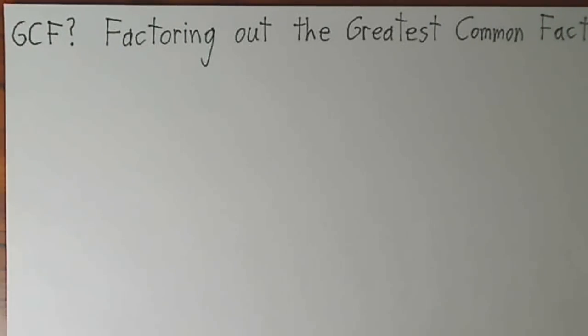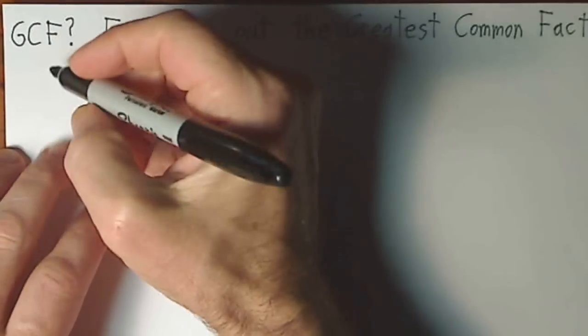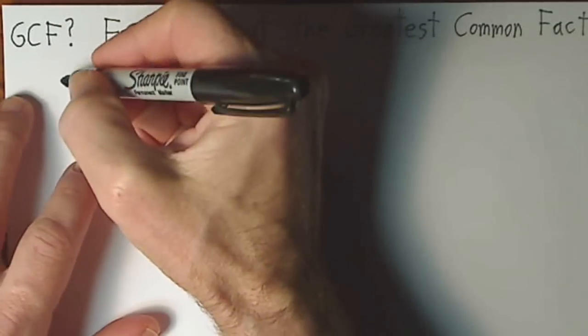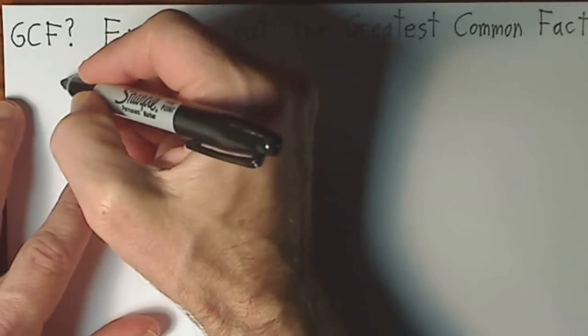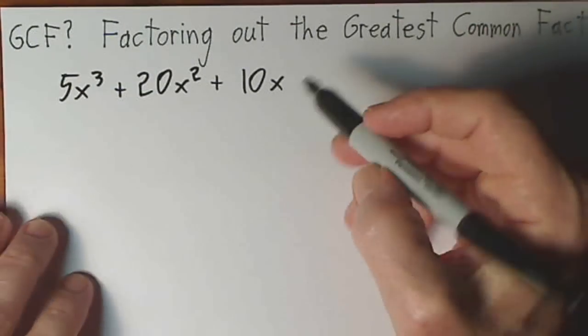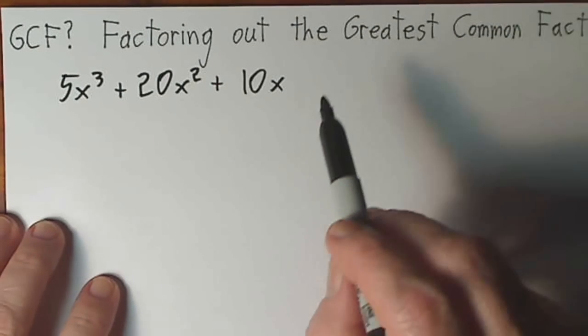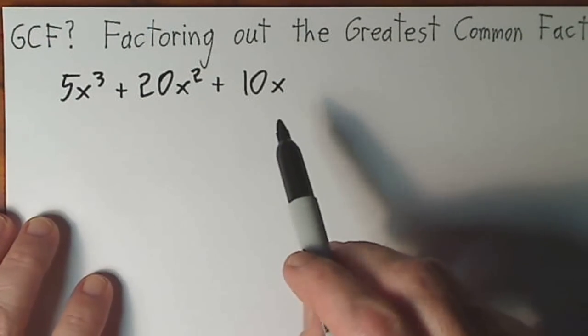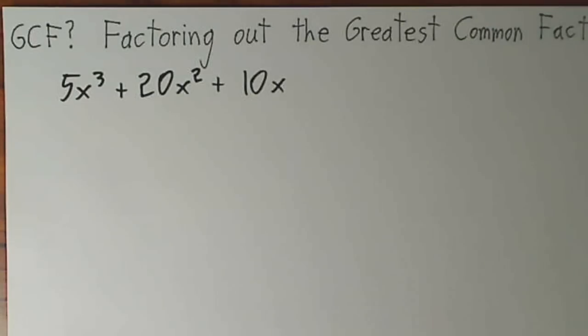If you're given a polynomial, let's start with the first one. I'll go through and explain in detail how we find the common factor and then factor it out.